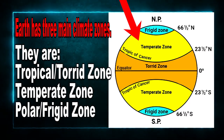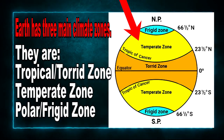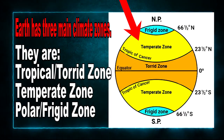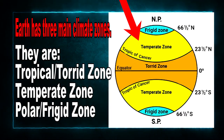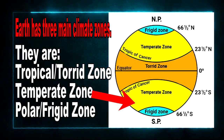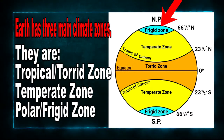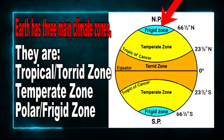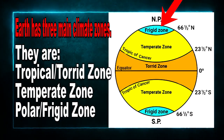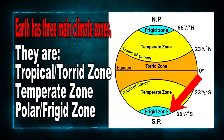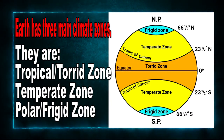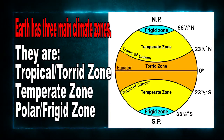Next, we have the temperate zones. The temperate zones are found in two places: to the north of the Tropic of Cancer and to the south of the Tropic of Capricorn. Next, we have the polar or frigid zones. The polar or frigid zones are found extremely to the north and extremely to the south of the earth. There you have an image showing you where the zones are located — the climatic zones.